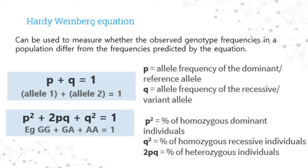Based on these assumptions, the Hardy-Weinberg equation is used to calculate allele frequency so we can measure whether the allele or genotype frequency in our population differs from equilibrium. Here, p defines the allele frequency of the dominant or reference allele, q is the allele frequency of the recessive or variant allele, and p plus q must equal one.